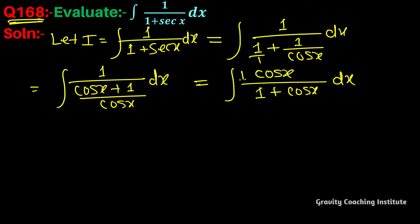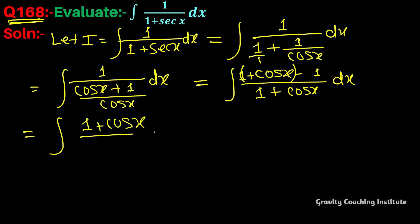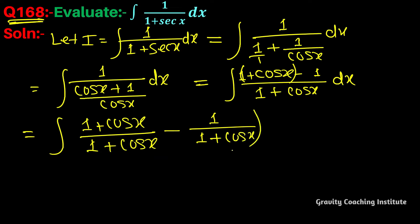Now we take 1 and subtract 1, then split the fraction. This gives us integration of (1+cos x)/(1+cos x) minus 1/(1+cos x) dx, which equals integration of 1 minus 1/(1+cos x) dx. The first term cancels to give 1.